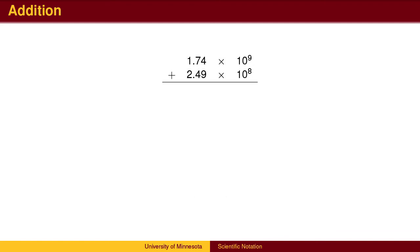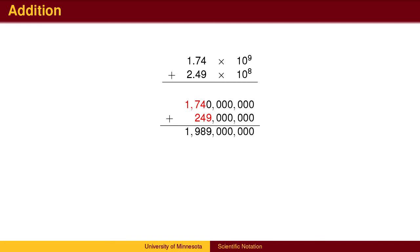Here is a second example. In this case, the first two digits on the bottom line will be significant in the sum. The numbers are added as usual. Only the first three digits are significant; the last seven digits are not, so we should round the answer to the nearest 10 million. The scientific notation contains three significant digits.